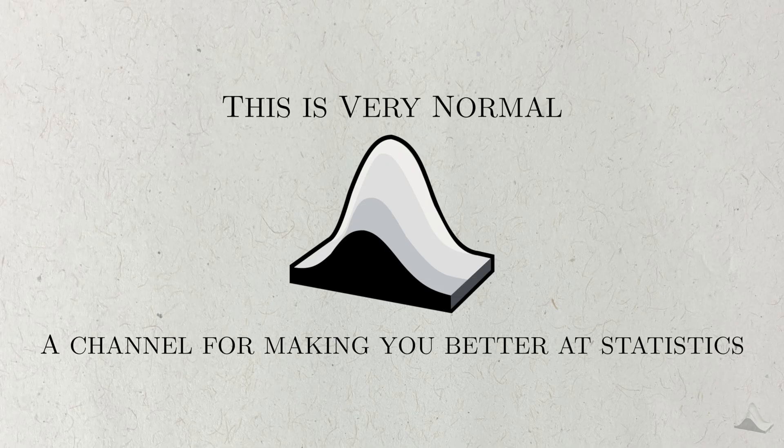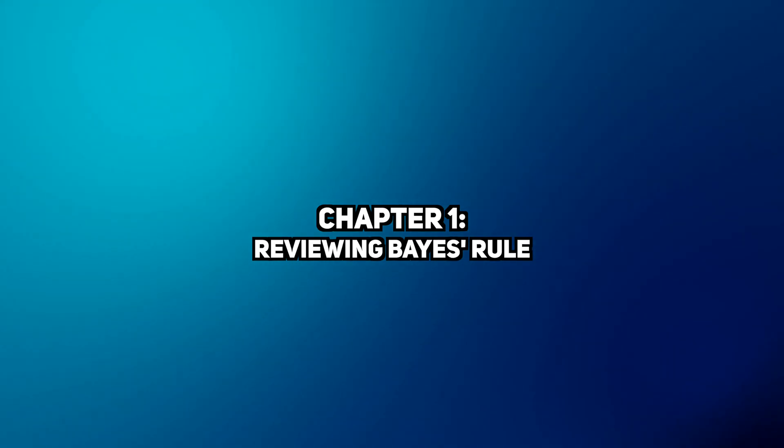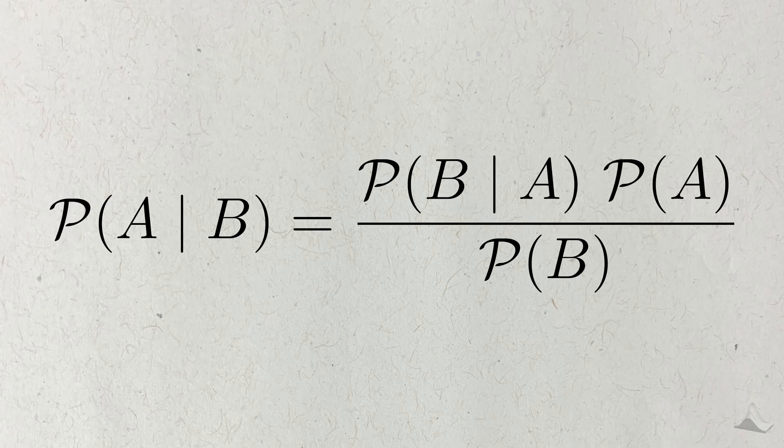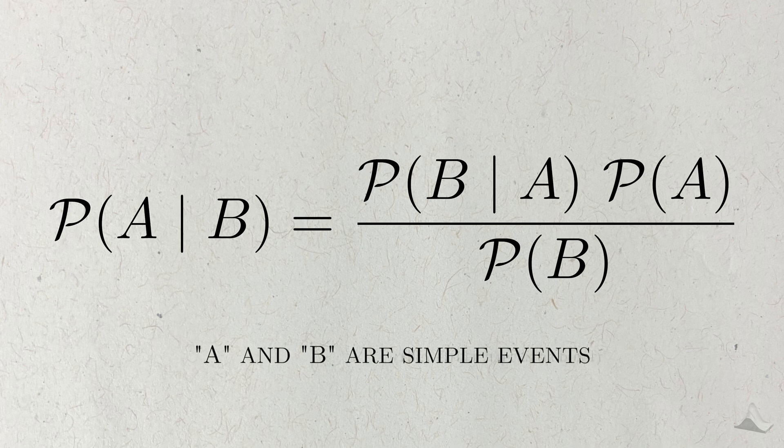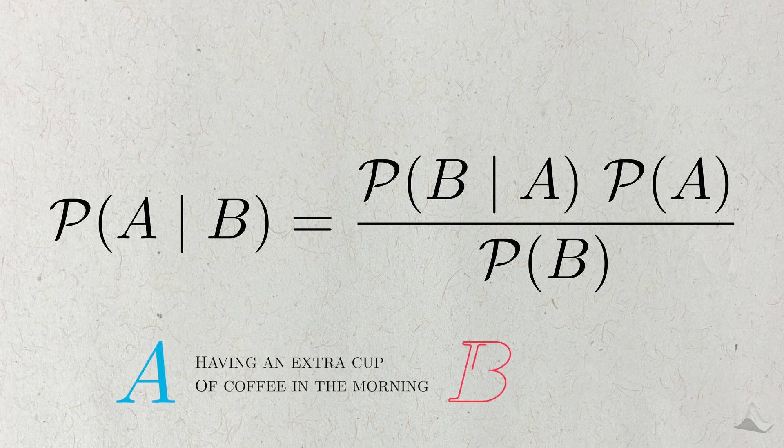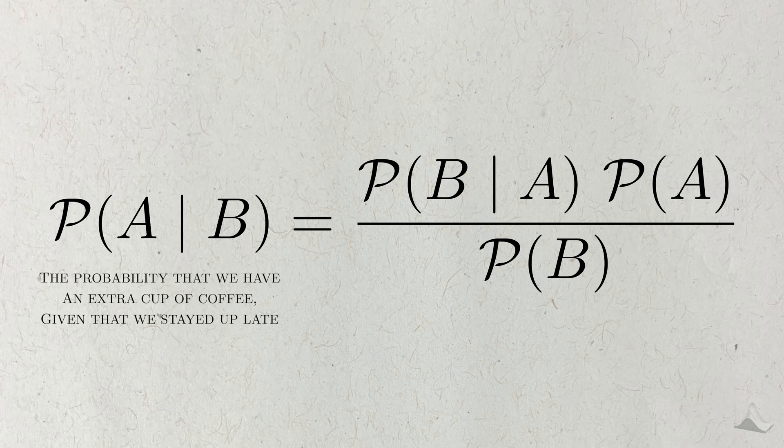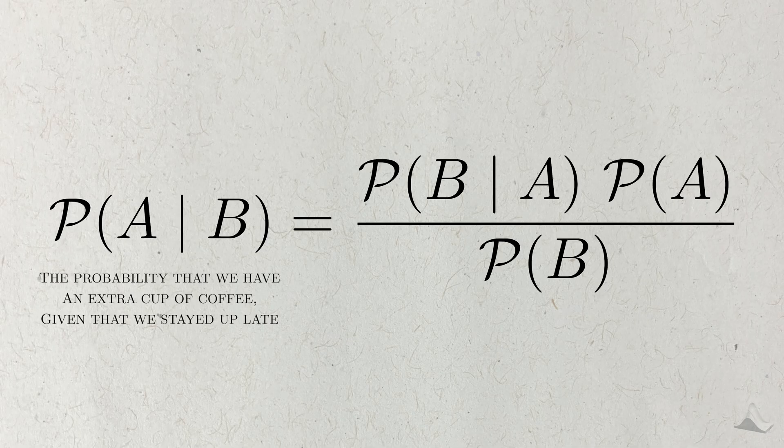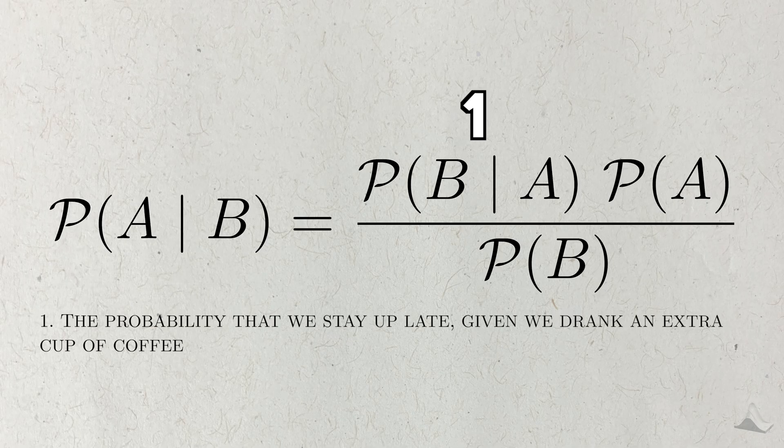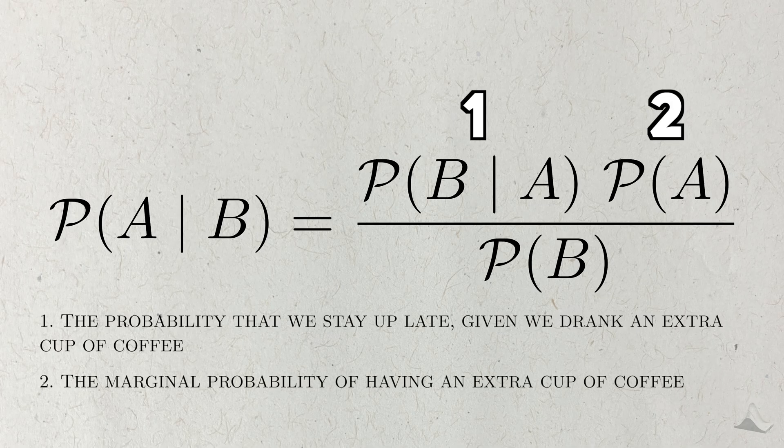To do Bayesian statistics, you need to understand the role of Bayes' rule. In its most basic form, before we involve any sort of statistics, A and B here are simple events. Let's say that event A is having an extra cup of coffee in the morning, while B is staying up until midnight. Bayes' rule tells us how to calculate the probability that we have an extra cup of coffee given that we stayed up late. We take the reverse conditional, the probability that we stay up late given that we had an extra cup of coffee, multiply it by the probability we have an extra cup of coffee in general, and divide it by the marginal probability of staying up late.